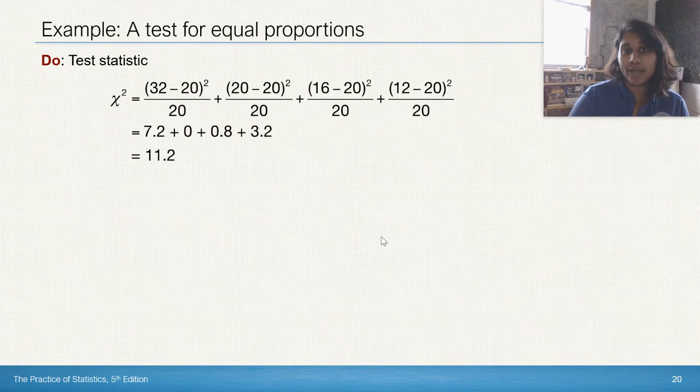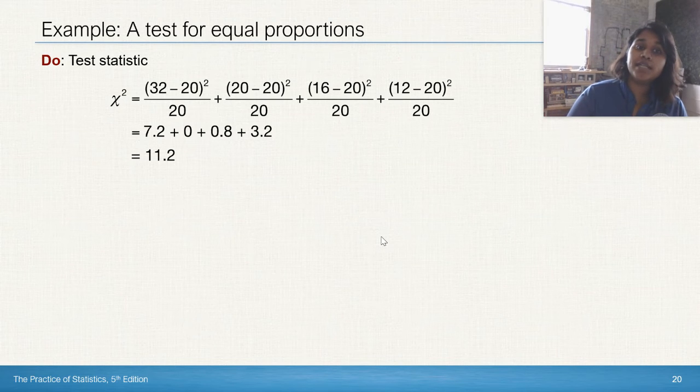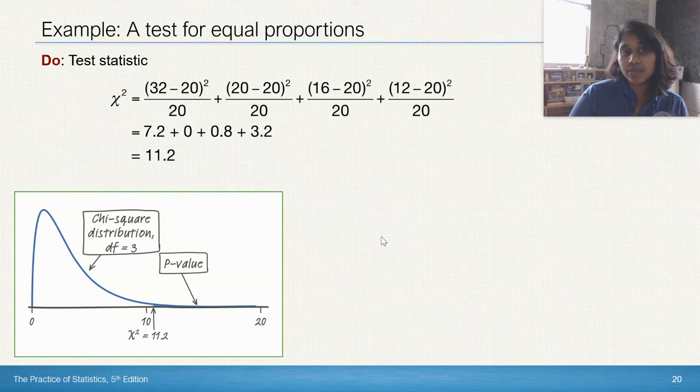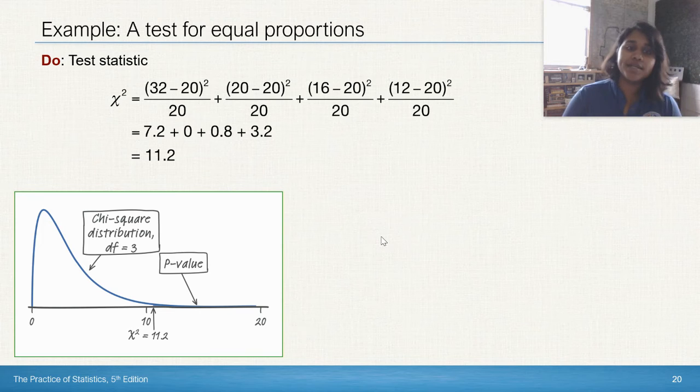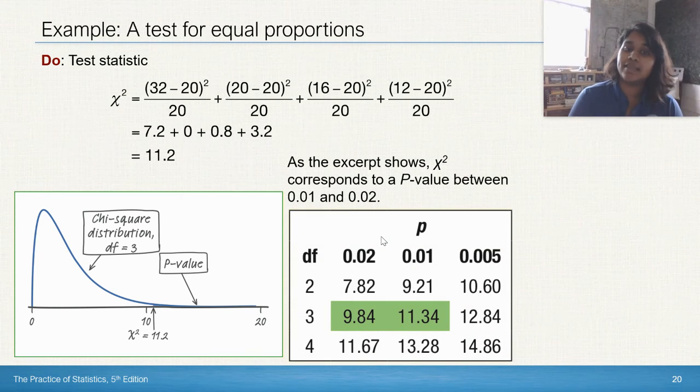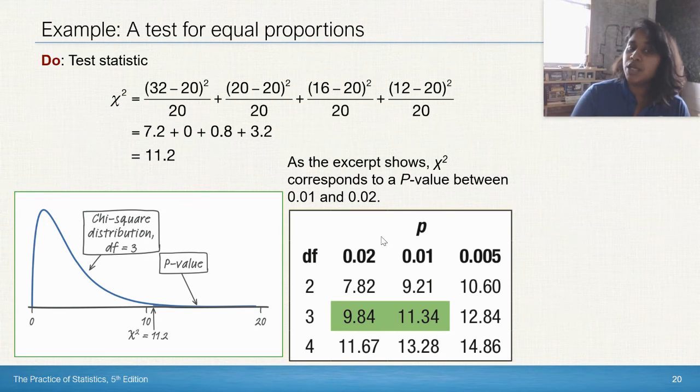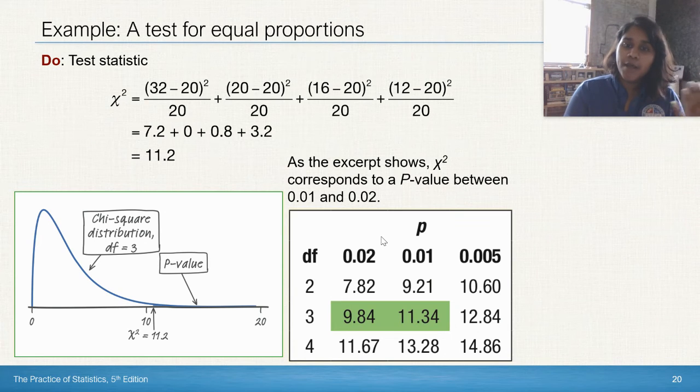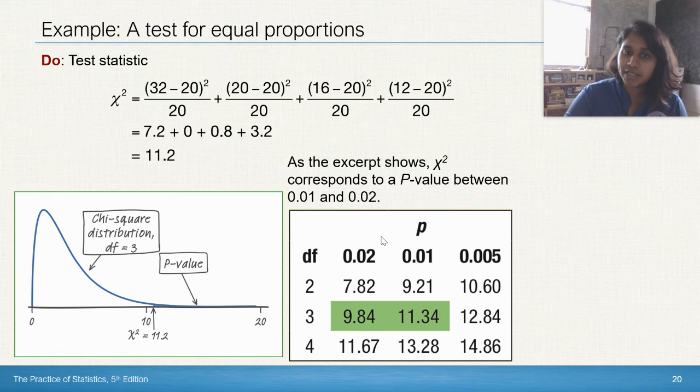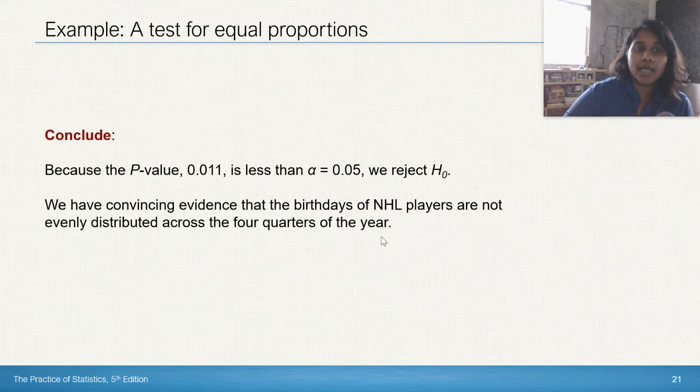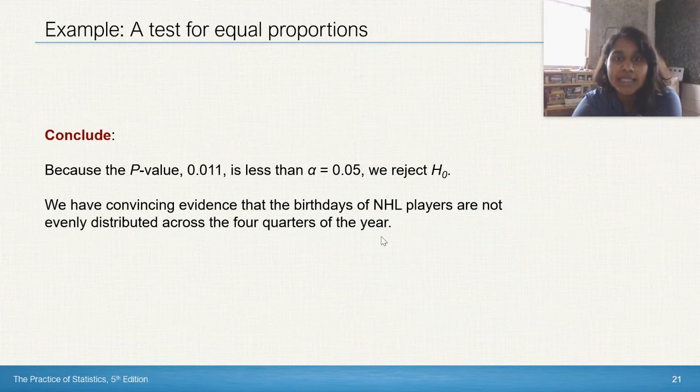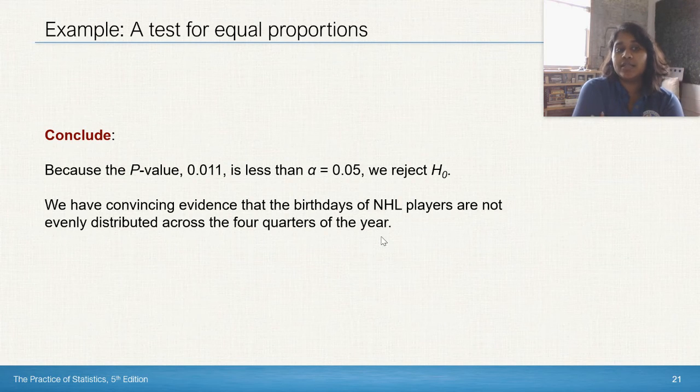So we do our test statistic. We actually solve our chi-squared. Again, we're using 20 as the expected value in each one of our categories, and we end up with a chi-squared value of 11.2. So I go to my chi-squared distribution. I'm going to go with the degrees of freedom of three because I had four categories, and I go ahead and look at my right tail P value looking at the table. So I go to degrees freedom three. I find two values which 11.2 lies in between, and that happened to be 9.84 and 11.34, which represent the P values 0.02 to 0.01. So if I said that simply my P value was just right above 0.01, then that would be 0.011, or even if I wanted to say it was right below 0.019 would be fine as well. But let's say we're claiming the P value is 0.011 or even 0.019. It's still going to be less than the alpha 0.05, and we end up rejecting the null hypothesis. Since we have convincing evidence that the birthdays of NHL players are not evenly distributed across the four quarters of the year because we were able to reject the null hypothesis.